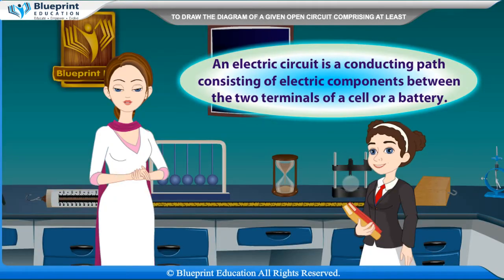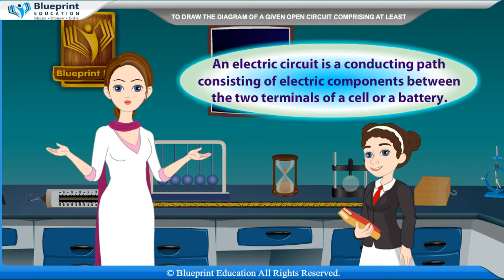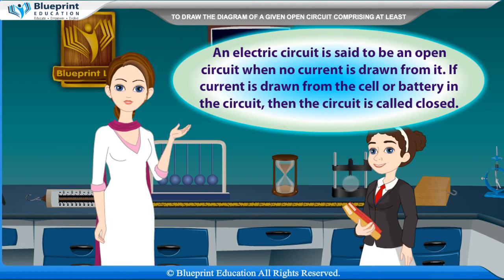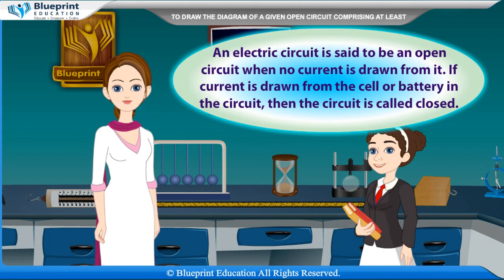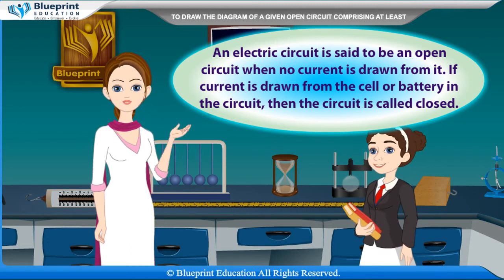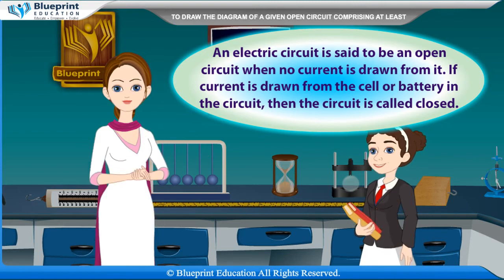An electric circuit is a conducting path consisting of electric components between the two terminals of a cell or a battery. An electric circuit is said to be an open circuit when no current is drawn from it. If current is drawn from the cell or battery in the circuit, then the circuit is called closed.